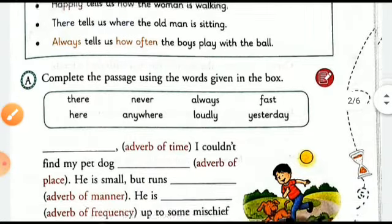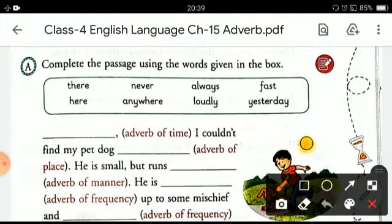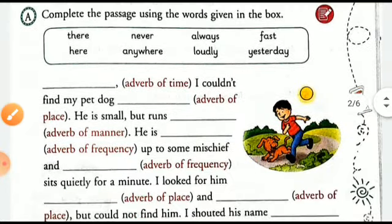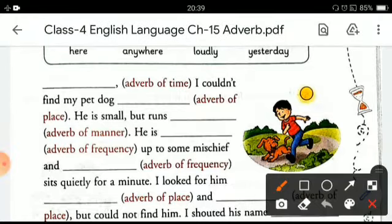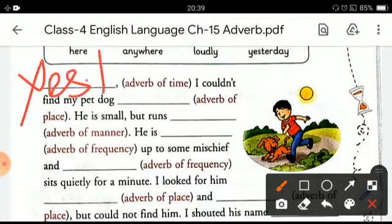Now let's do the exercise. You have to complete the passage using the words given in the box. The first one — you have to complete the fill with an adverb of time. The first word is 'yesterday.' We can complete the sentence by filling in the word 'yesterday.' It's an adverb of time: 'Yesterday, I couldn't find my pet dog.'